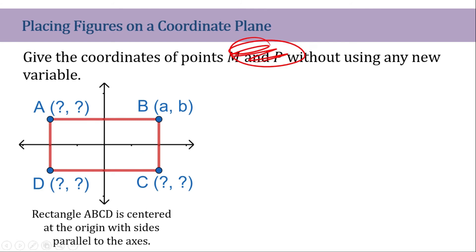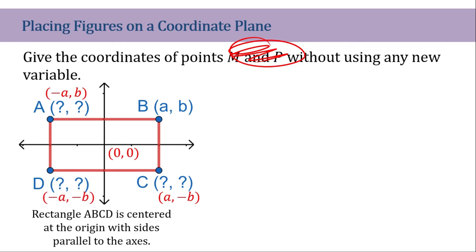Let's check all the coordinates here. This is (0, 0). This is (-A, B). This is (A, -B). And this is (-A, -B). This is a rectangle placed at the center of the Cartesian plane.